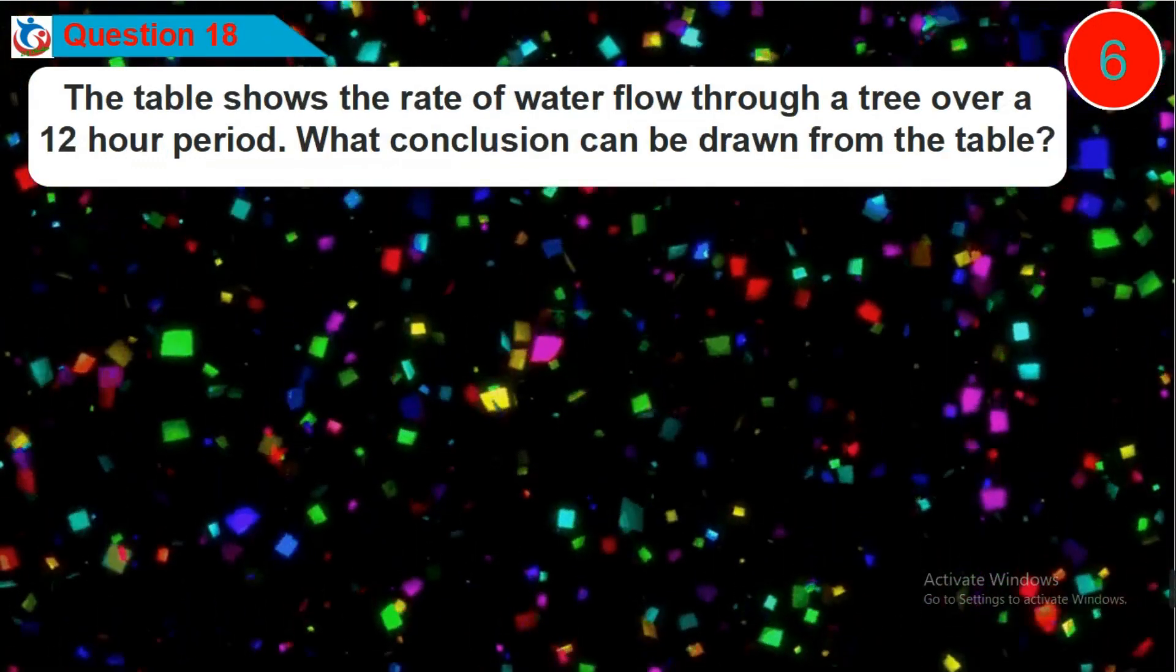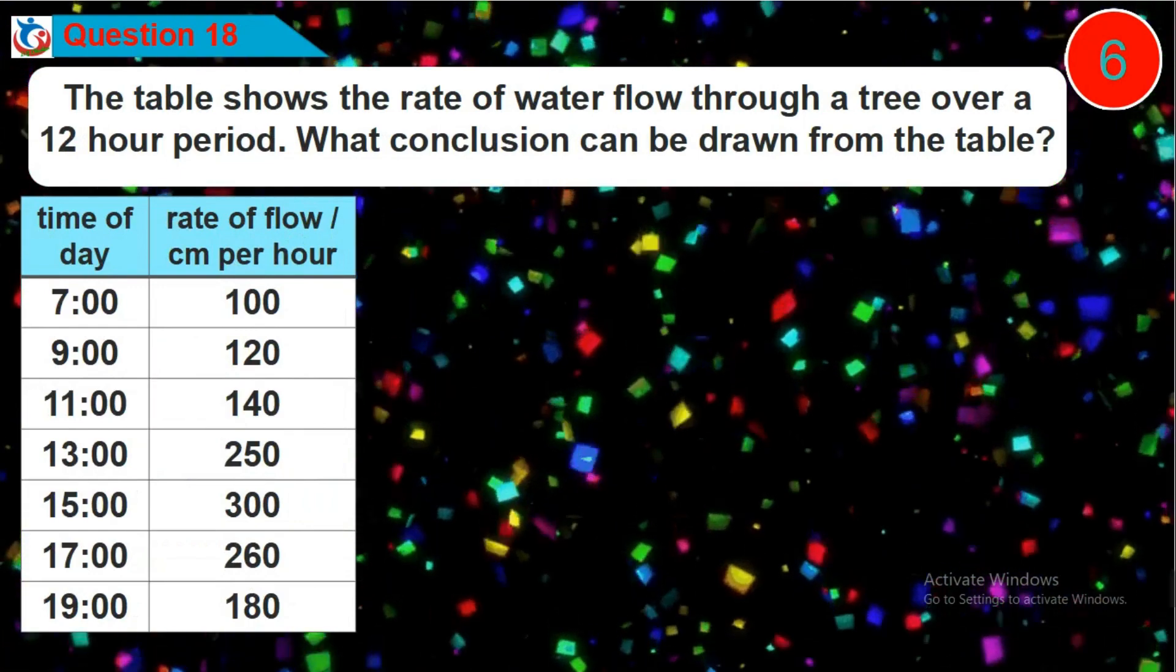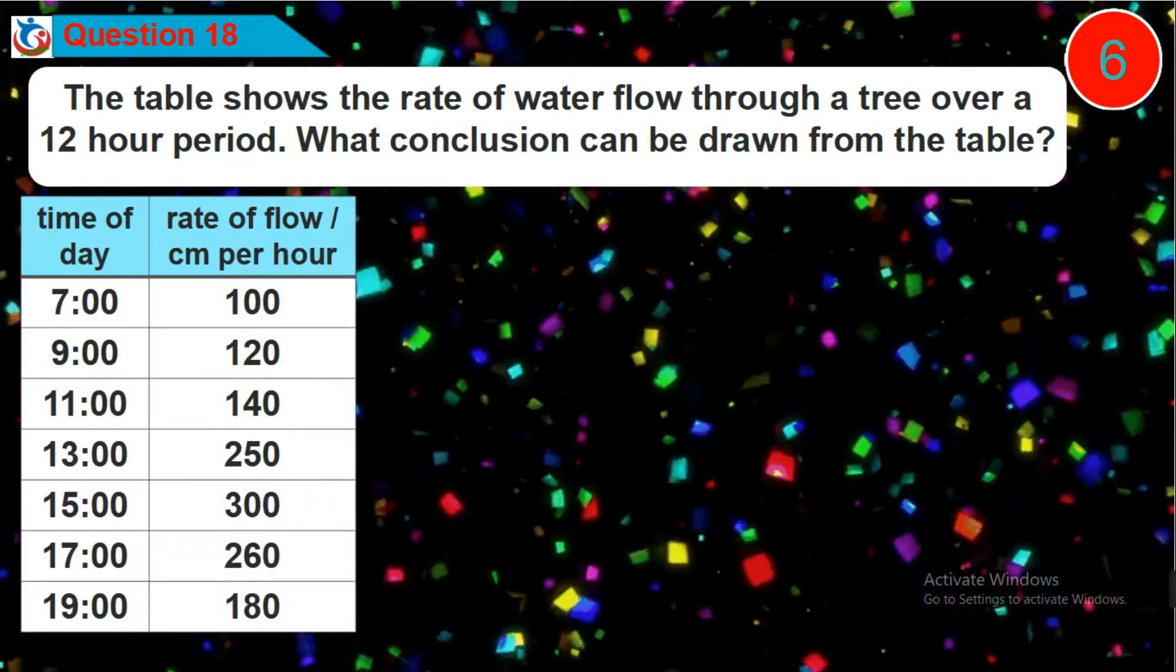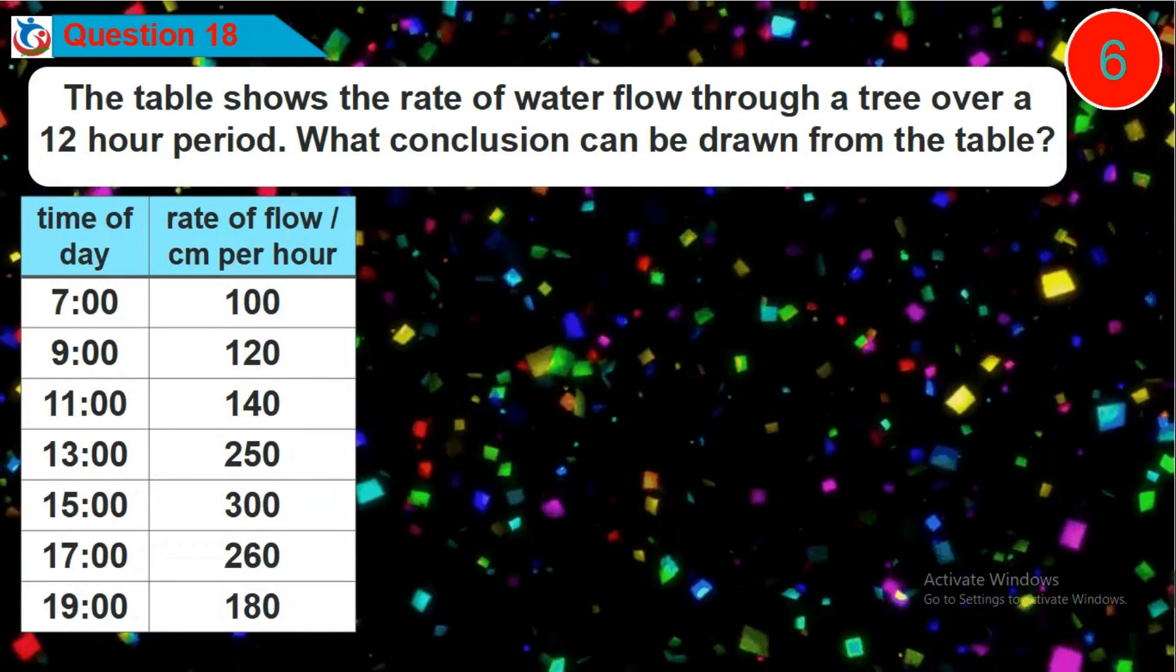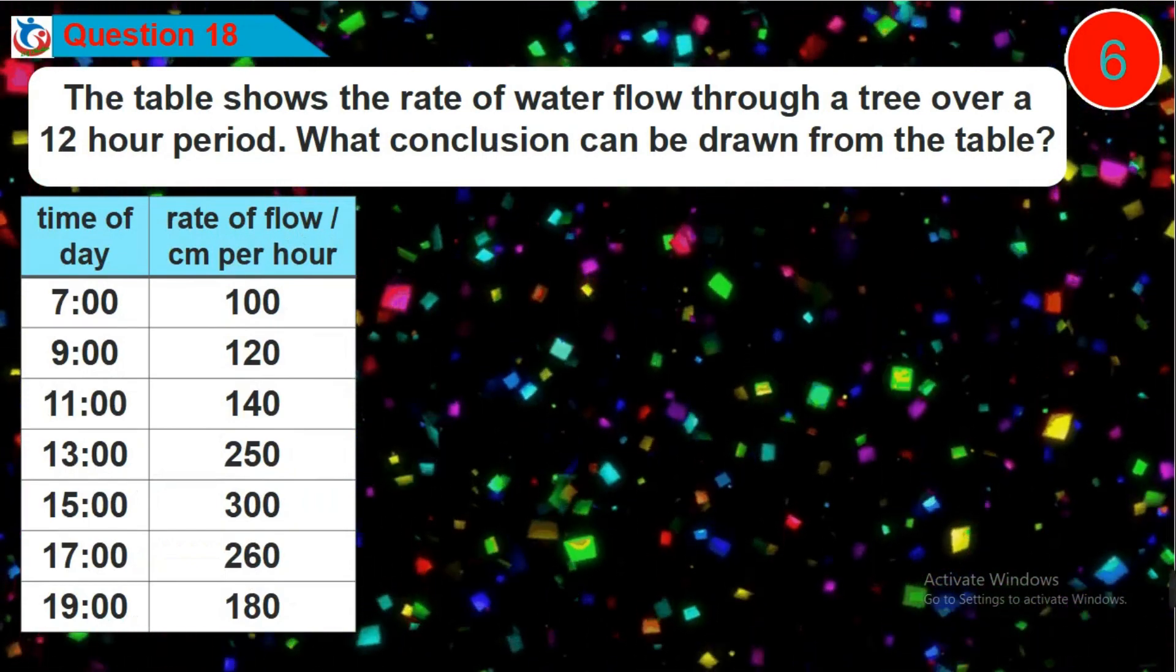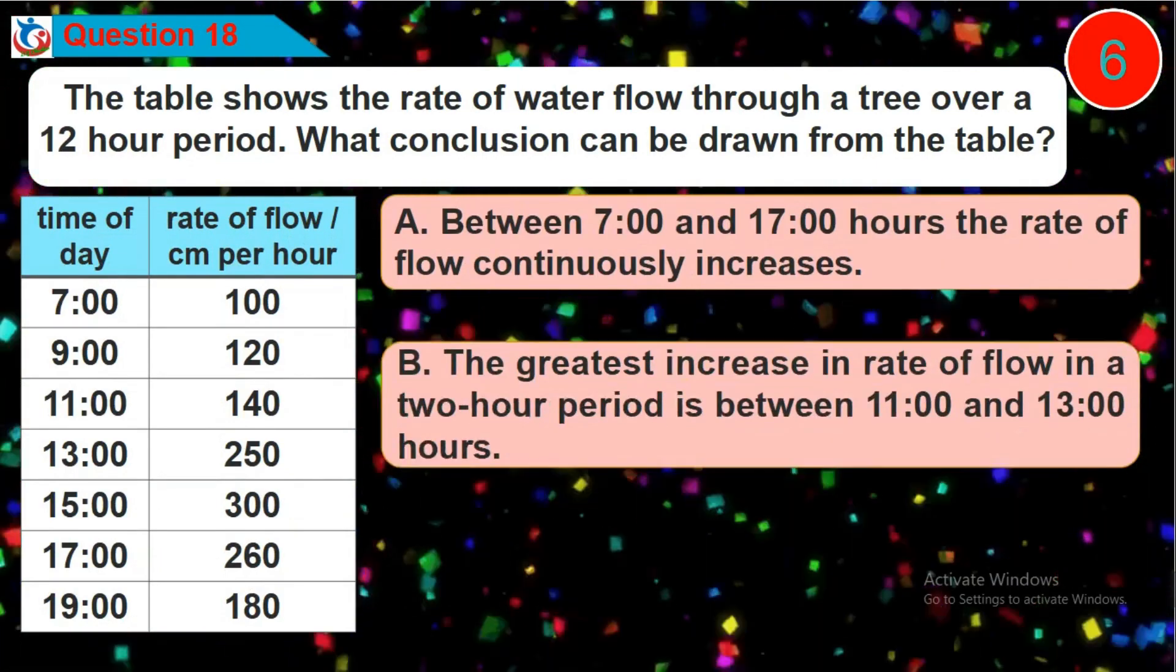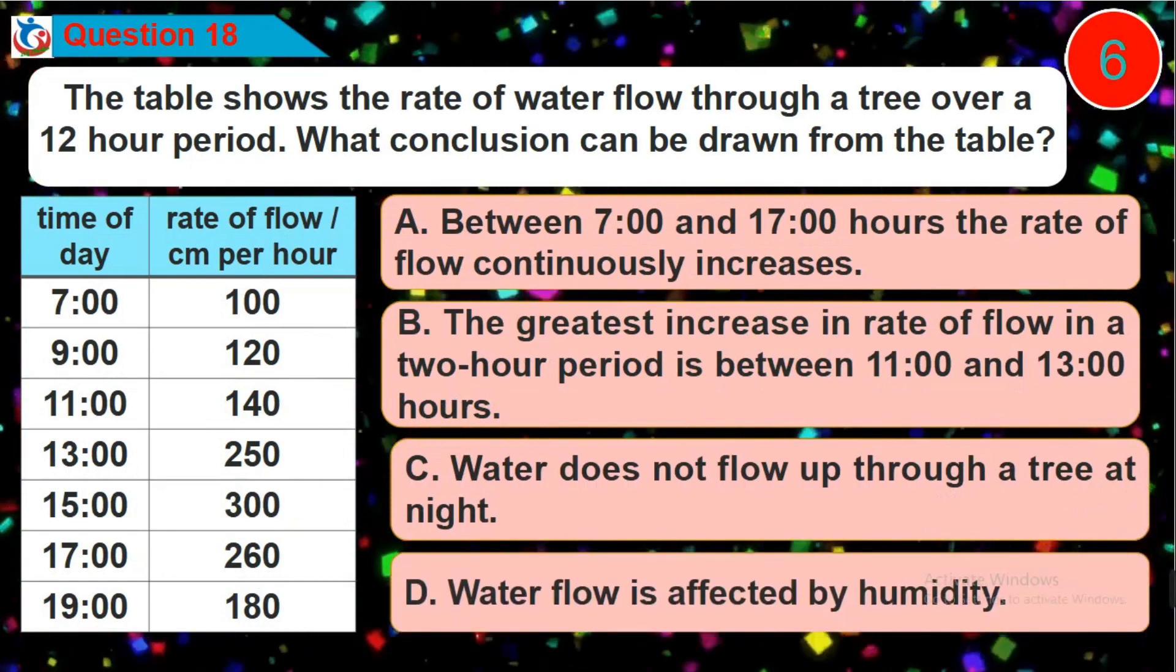Question 18. The table shows the rate of water flow through a tree over a 12 hour period. What conclusion can be drawn from the table? Is it option A, B, C or D?